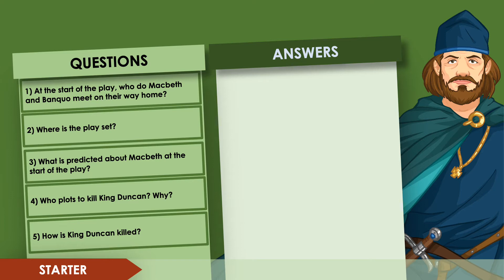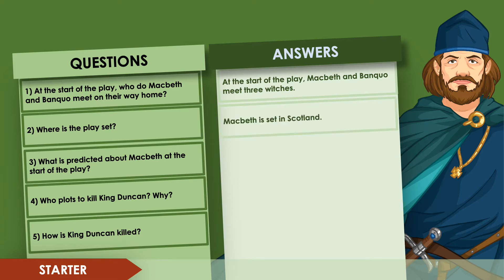Question one: at the start of the play, who does Macbeth and Banquo meet on their way home? At the start of the play, Macbeth and his best friend Banquo meet three witches. Question two: where is the play set? Macbeth is loosely based on true events in medieval Scotland. As the king at the time was James the First of England, or James the Sixth of Scotland, this choice was clearly made to please James the First.